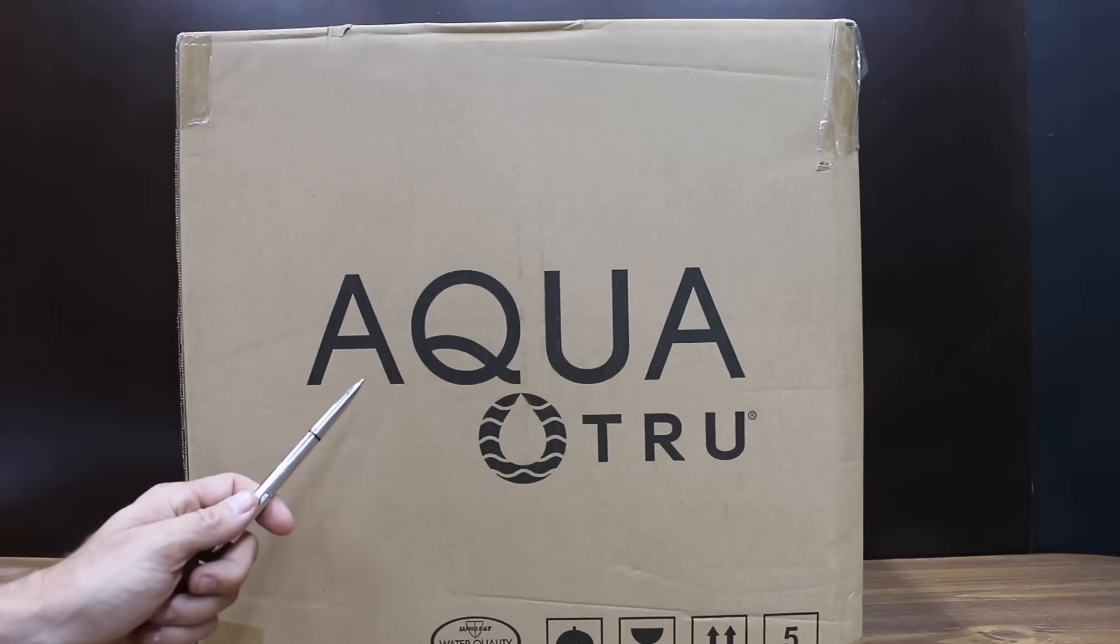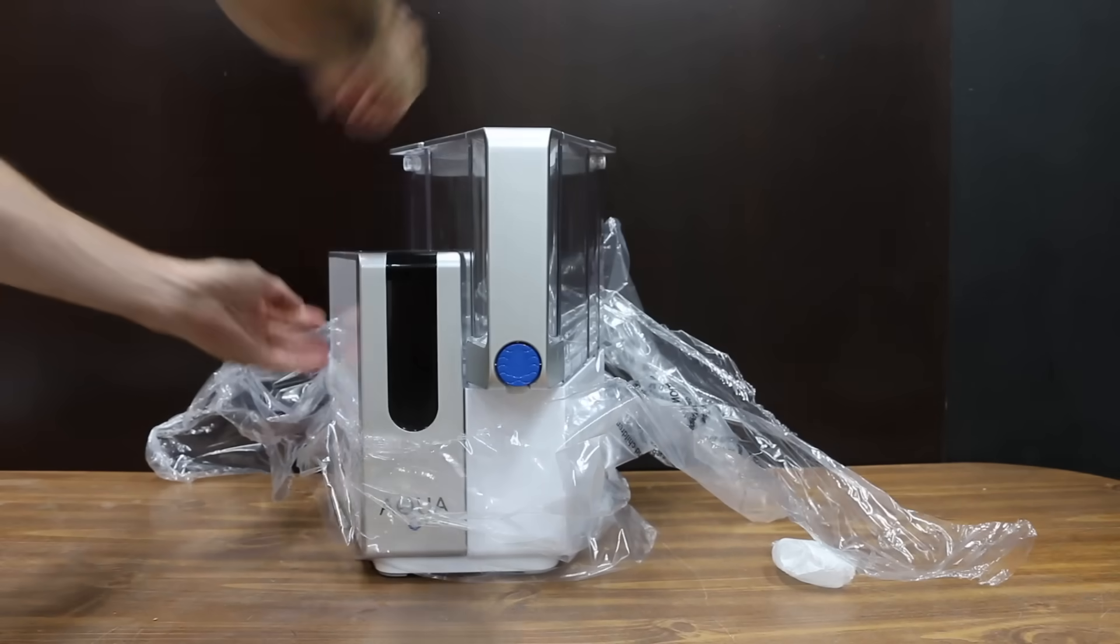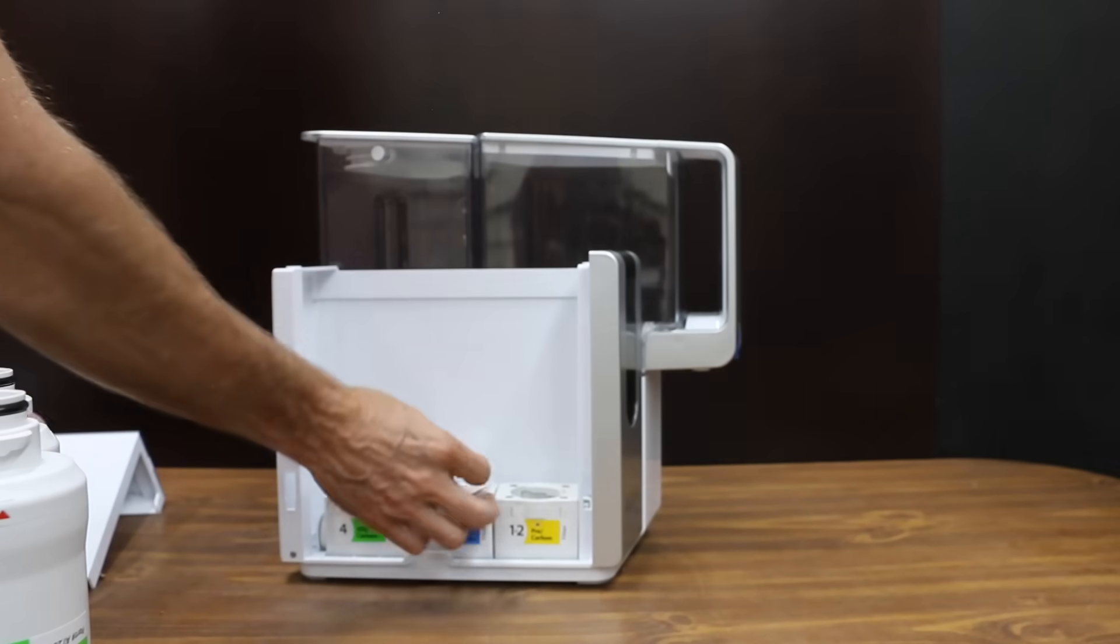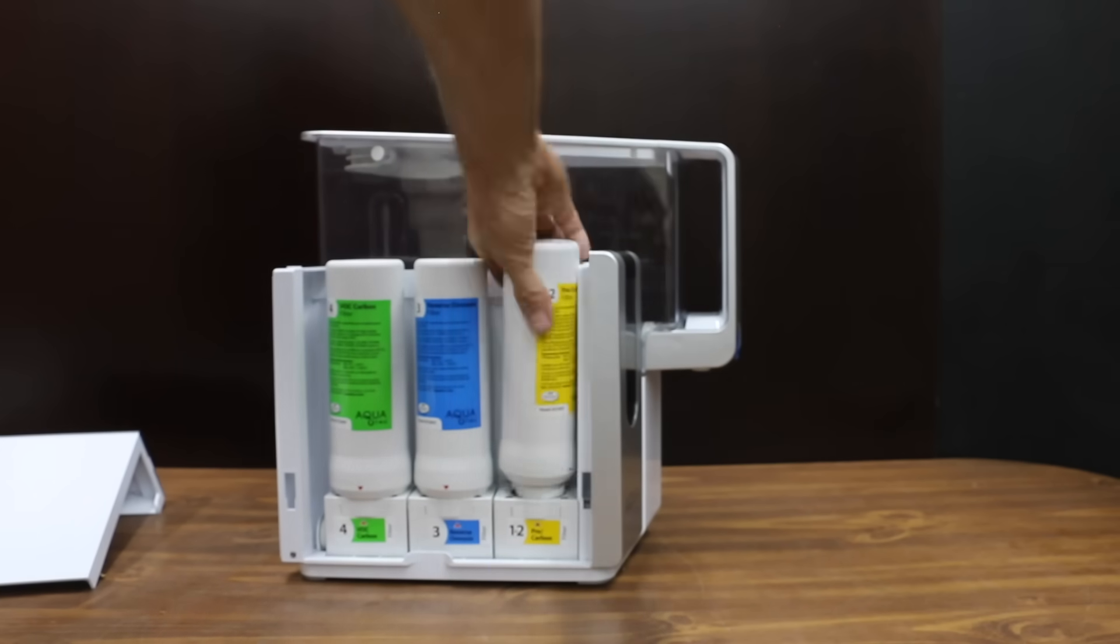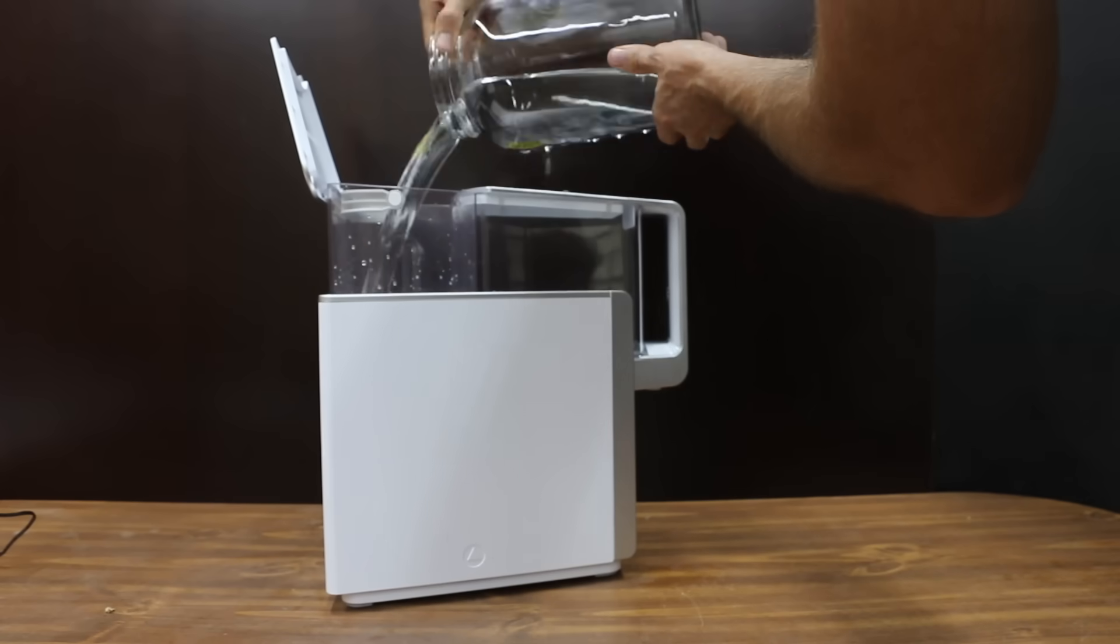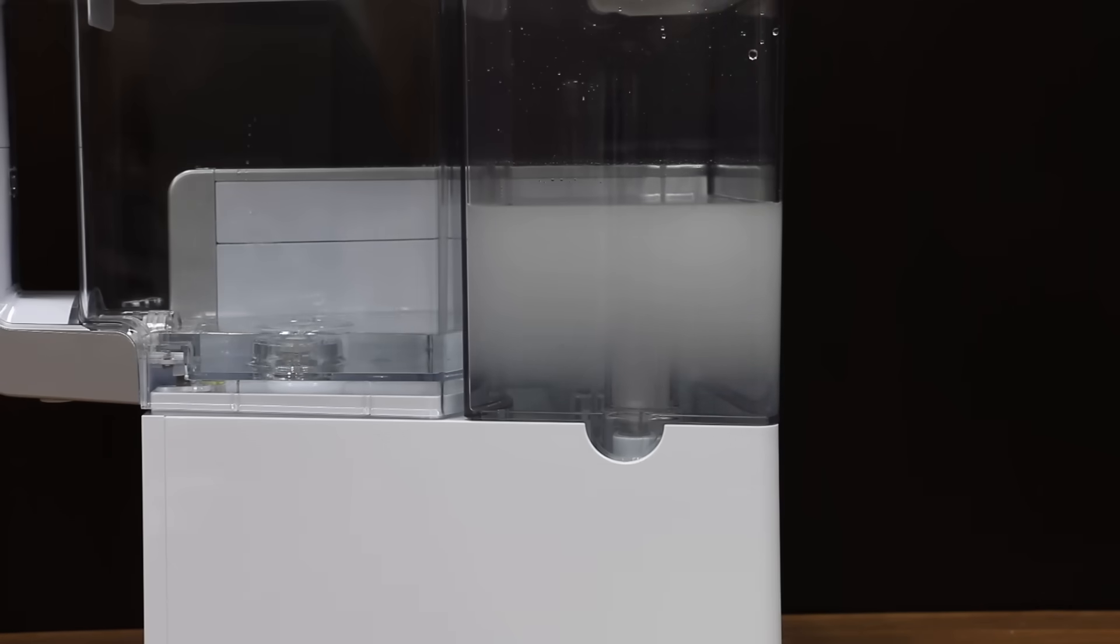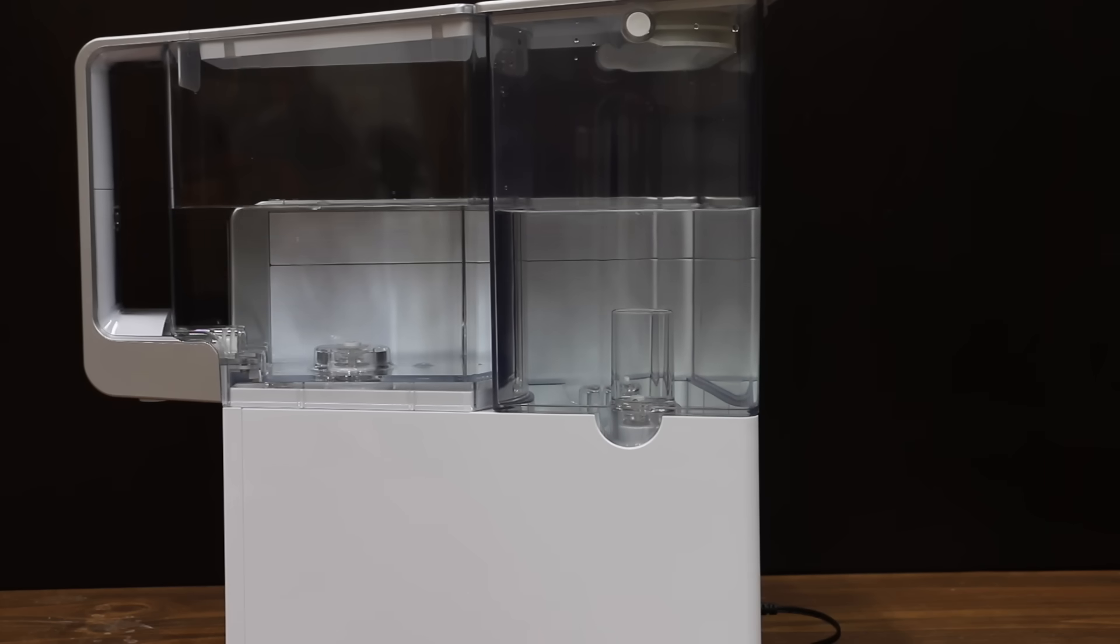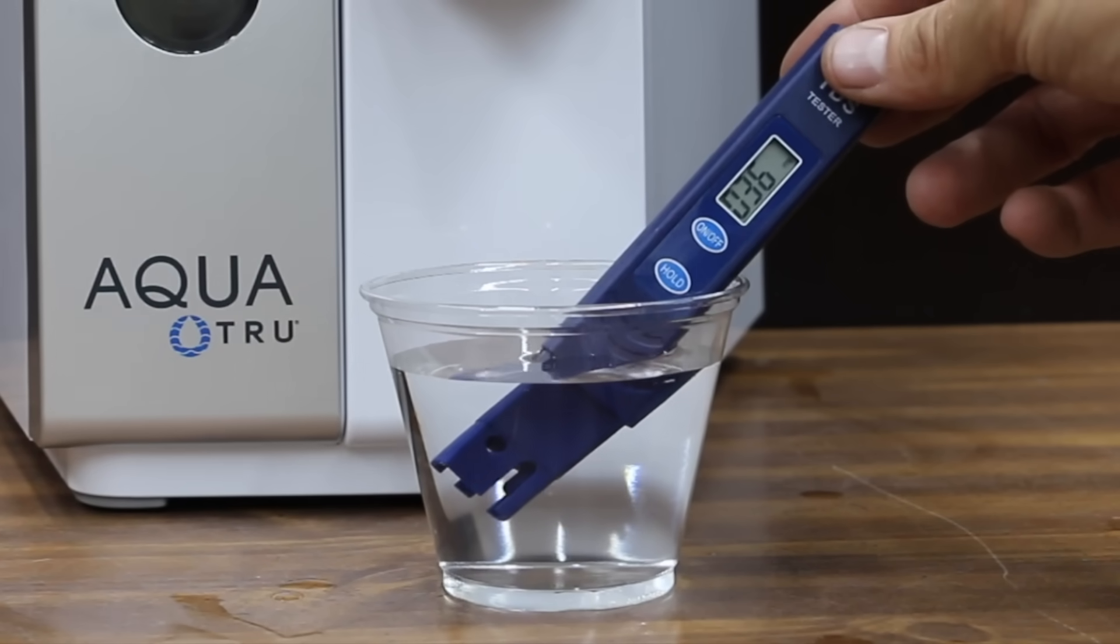At $427, the AquaTrue Reverse Osmosis Water System is the most expensive system we'll be testing. Exclusive four-stage ultra-reverse osmosis technology. No plumbing or installation required. Insert the filters into each filter base by turning the filter in a clockwise direction. When installing the filters, be sure to insert them in the correct base by matching the label numbers and colors. Fill tap water tank with cold water and reinstall. Power the AquaTrue using the switch located in the back. I went ahead and ran four unfiltered tap water tanks through the AquaTrue according to the instructions. The AquaTrue is assembled in China. The AquaTrue Reverse Osmosis did very well at only 36 parts per million.